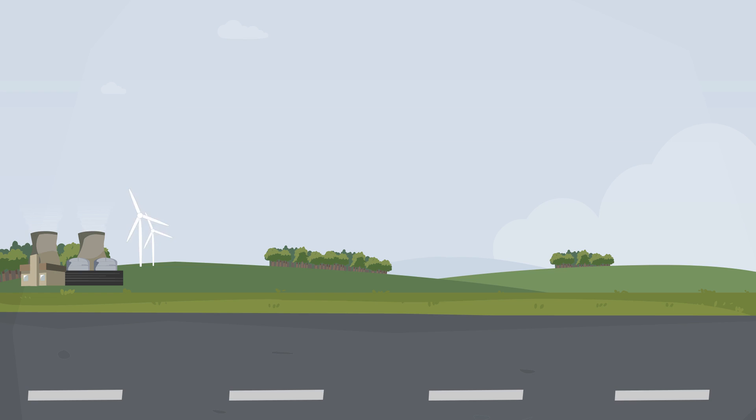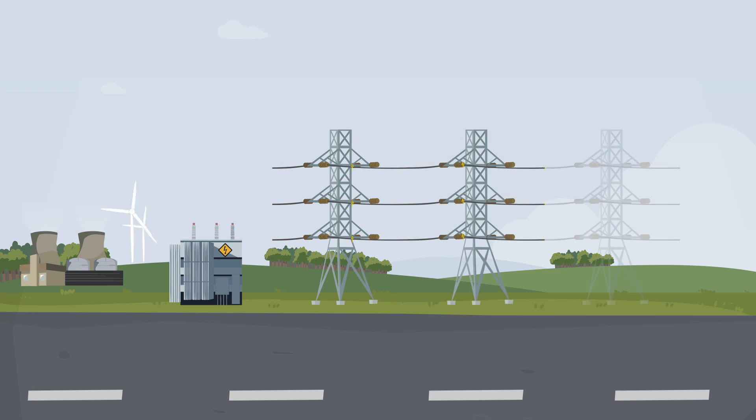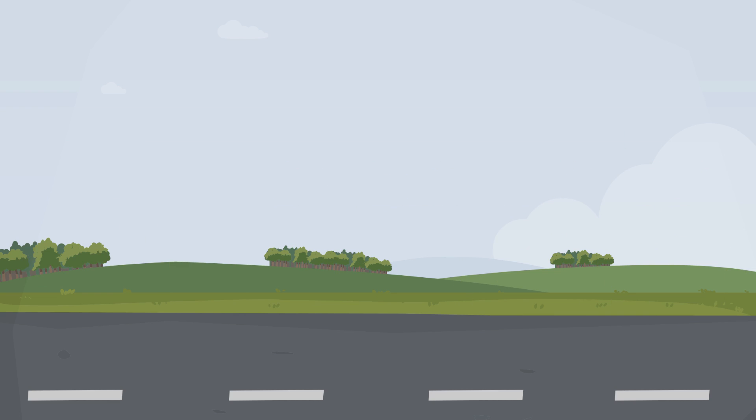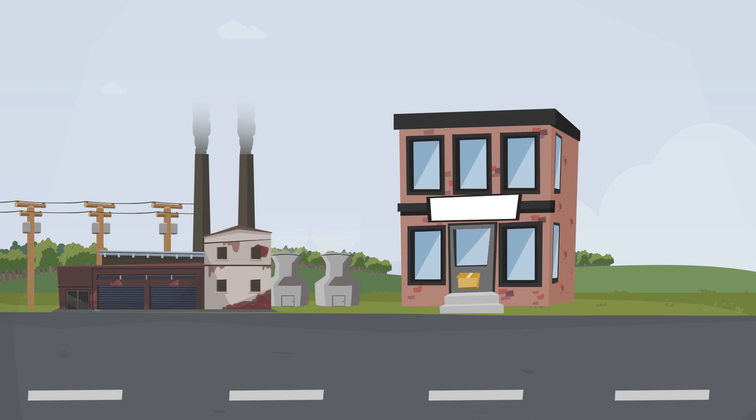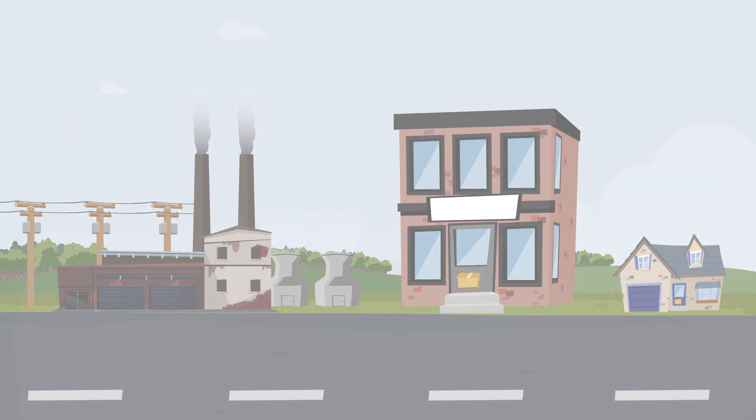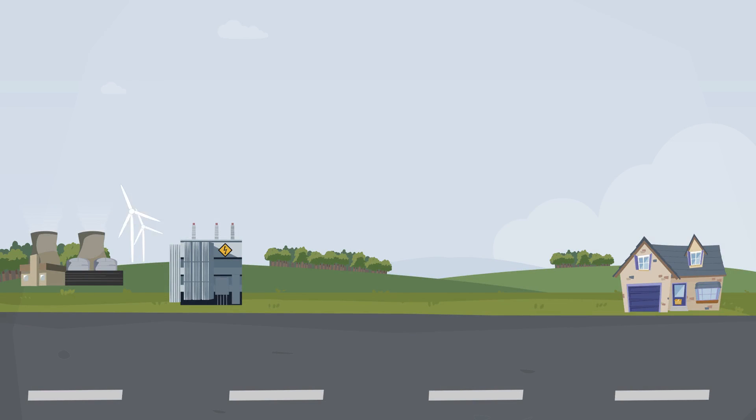Regardless of the method of generation, all electricity is fed through a large transformer at the power plant which increases the voltage. This higher voltage electricity is then fed into the distribution network known as the national grid. Local substations around the country take the electricity and reduce the voltage to levels that can be utilized by industrial, commercial, and domestic users. This electricity starts life at the power station at around 400kV. By the time it reaches your home, it has been reduced to 230V.